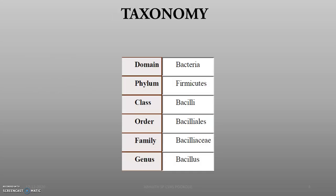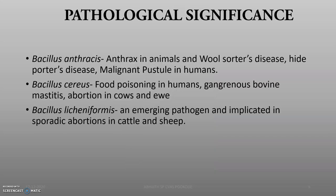The taxonomy: Bacillus belongs to the domain Bacteria, phylum Firmicutes (gram positive), family Bacillaceae, and genus Bacillus. The pathological significance is that Bacillus anthracis causes anthrax in animals, known in rural language as adepin, and wool sorter's disease, hide porter's disease, and malignant pustule in humans.